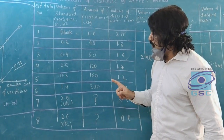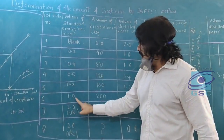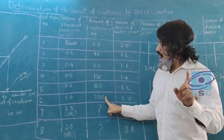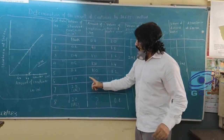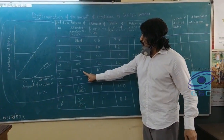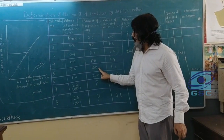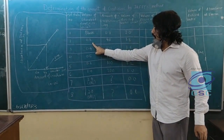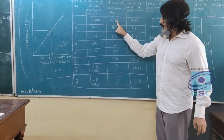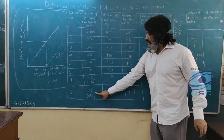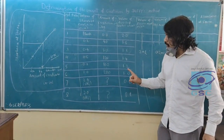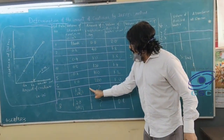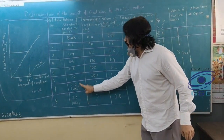Since 1 ml of standard solution contains 200 micrograms, 0.8 ml contains 160 micrograms, 0.6 ml contains 120 micrograms, 0.4 ml contains 80 micrograms, and 0.2 ml contains 40 micrograms. The blank has no creatinine. Test tubes seven and eight are the unknown samples. The aim of the experiment is to find out the concentration of creatinine in the unknown — that is done by Jaffe's method.